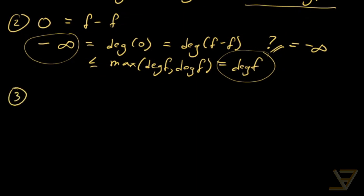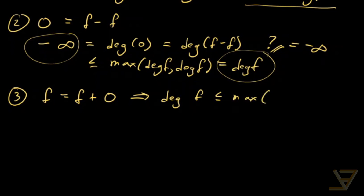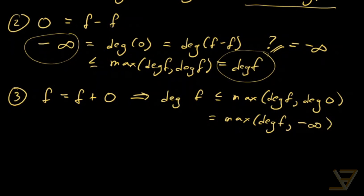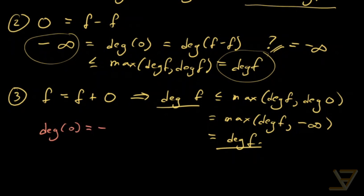Our final sanity check: f = f + 0, so deg(f) ≤ max(deg(f), deg(0)) = max(deg(f), −∞) = deg(f), since deg(f) ≥ −∞. So deg(f) ≤ deg(f), which is true. That takes care of all the sanity checks. So the degree of the zero polynomial is best stated as negative infinity — a convention established by extending the rules of arithmetic.